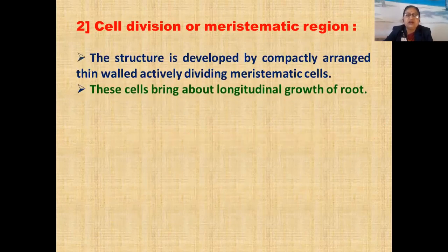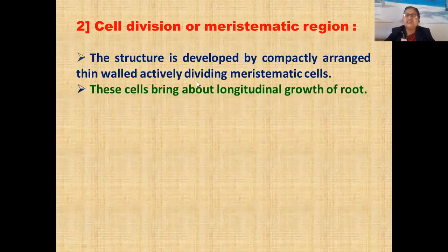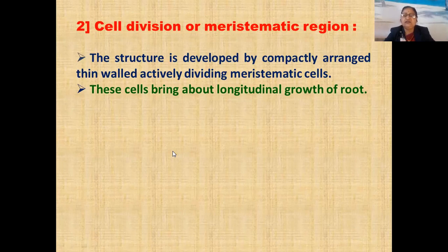The second region: region of cell division or meristematic region. The structure is developed by compactly arranged thin-walled, actively dividing meristematic cells. Meristematic cells have the capacity of cell division. These cells bring about longitudinal growth of the root.